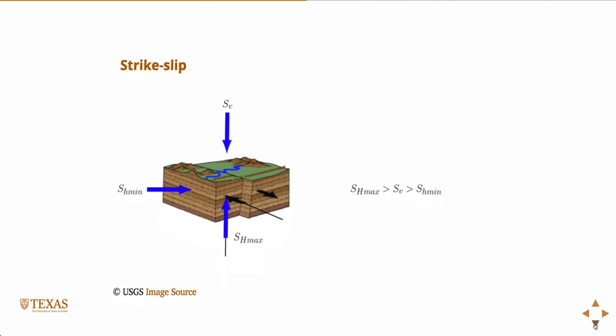And so the last one is the strike-slip faulting regime. And so in this case, the vertical stress is in the middle, and then you order the other two. And the way I have it drawn, I just want to point out that the horizontal stresses are in the plane, but they're not necessarily perpendicular. So these black arrows indicate the relative motion of the fault, but the direction of the principal stress doesn't necessarily need to align with that. It's in this same plane. And it could possibly be in a direction parallel to the fault, but it doesn't have to be. That doesn't concern the classification.